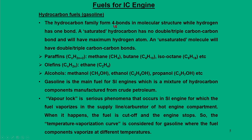Gasoline fuels come under the hydrocarbon family with a four-bond molecular structure and hydrogen as one bond. This hydrocarbon family has two components: saturated and unsaturated. In a saturated hydrocarbon, there are no double or triple carbon-carbon bonds, so they have maximum hydrogen atoms. In an unsaturated molecule, there are double or triple carbon-carbon bonds with fewer hydrogen atoms. In our category of gasoline fuels, we have paraffins — methane, butane, isooctane — olefins, and alcohol types such as methanol, ethanol, and propanol.